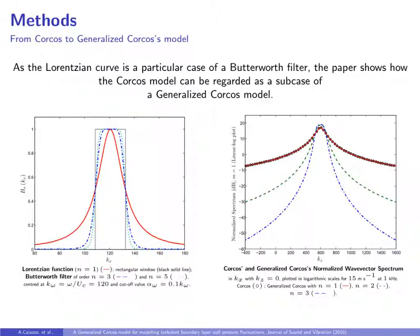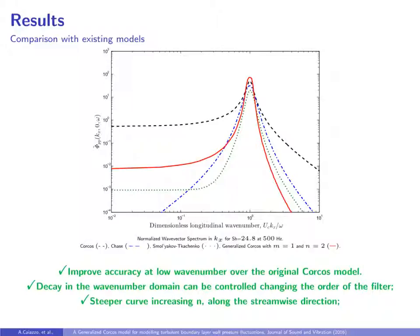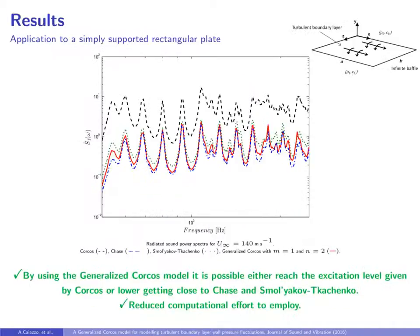The wave number frequency spectra of the different models with respect to the dimensionless longitudinal wave number are here shown. The generalized Corcos spectrum for m equal to 1 and n equal to 2 is given by the red solid curve. By choosing these orders, it's possible to reach, at low wave numbers, about 20 dB less than Corcos, given by the black dashed curve. That means an improved accuracy at low wave number and a steeper curve, which brings the spectral level closer to the Chase and Smol'yakov-Tkachenko one.